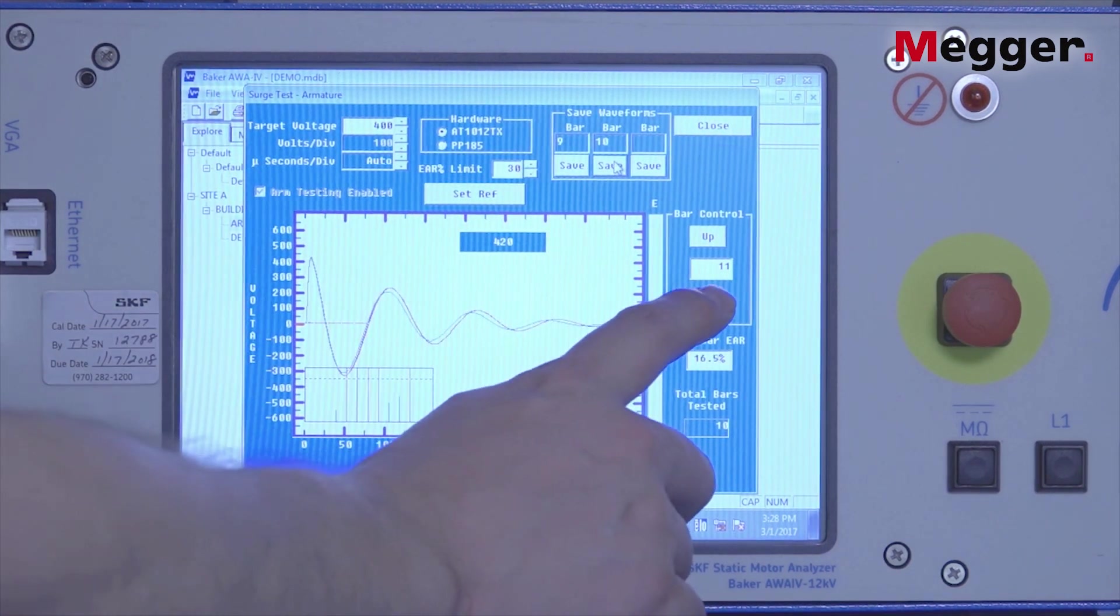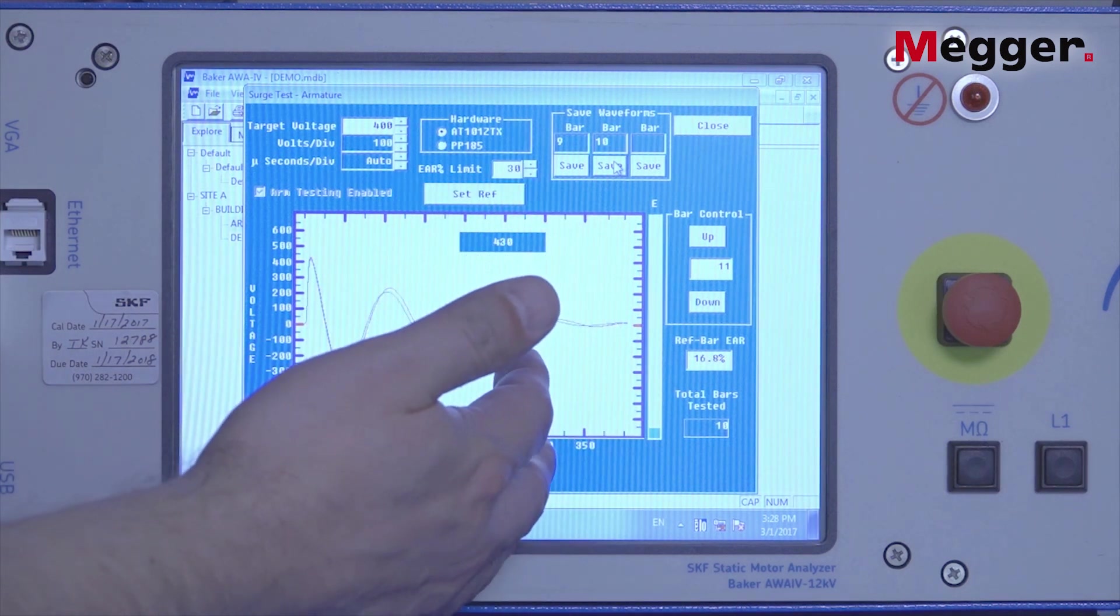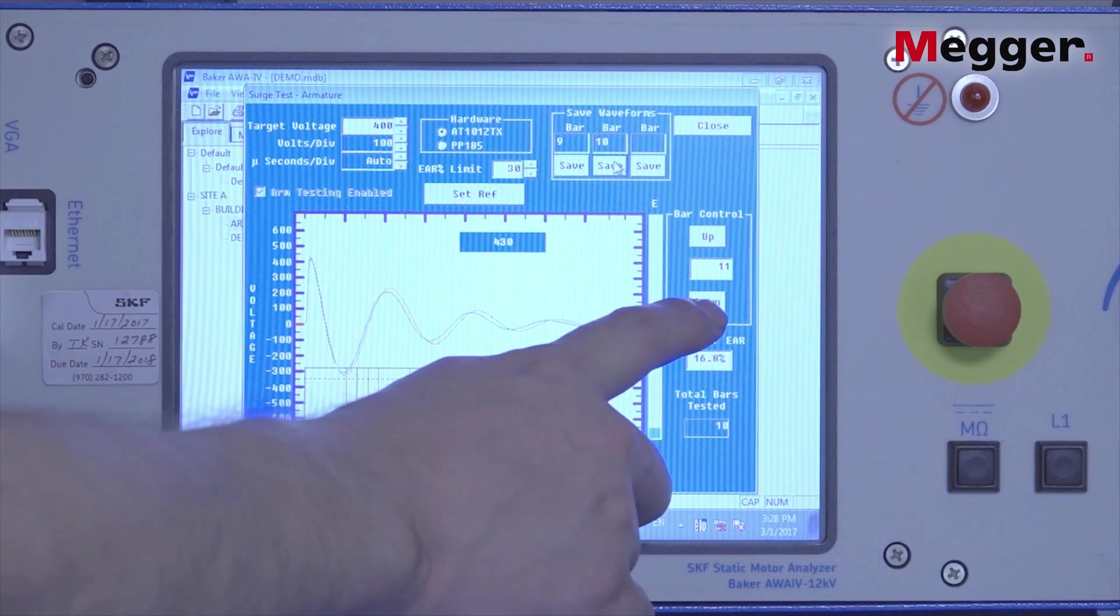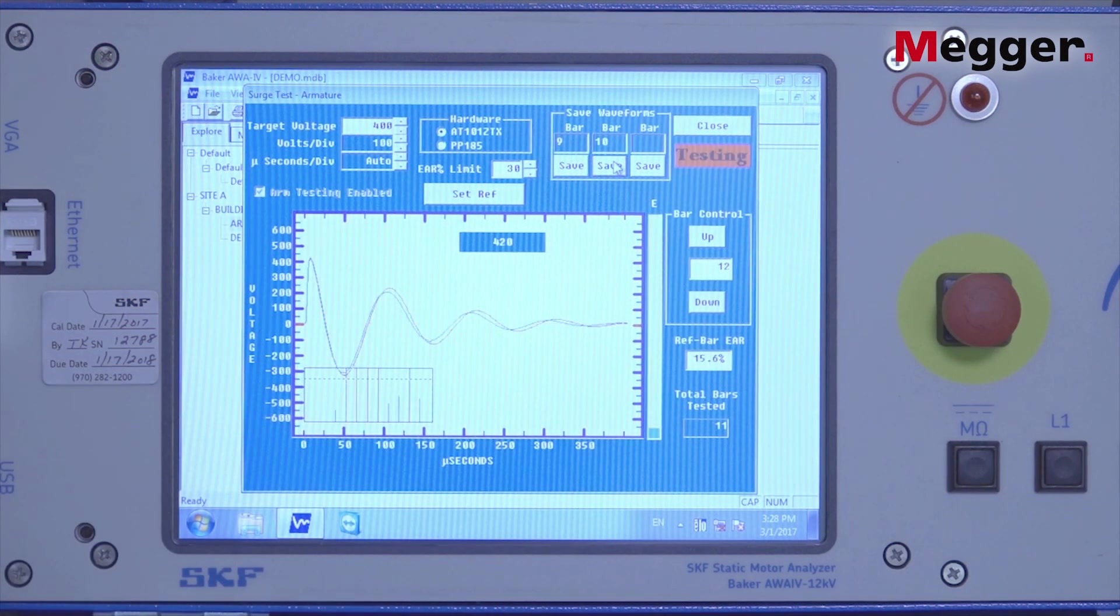The bar auto advances with each test. If for some reason there's a problem and you need to back up, you can click the down button and it'll reverse that bar control number.